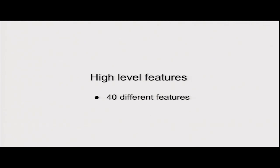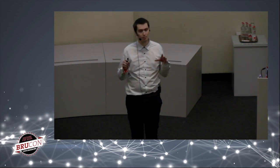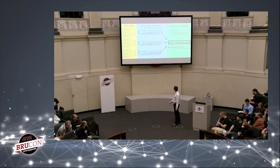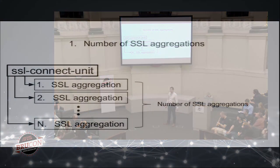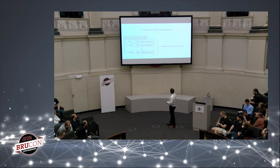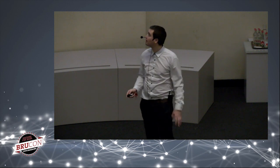We have 40 high-level features used for the machine learning algorithms, all computed from the SSL connect unit — not from individual SSL aggregations. The first feature is simply the number of SSL aggregations in one SSL connect unit. Then there is the mean and standard deviation of duration — each SSL aggregation has a duration, and we compute mean and standard deviation from the list of values.